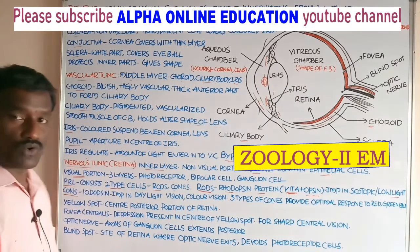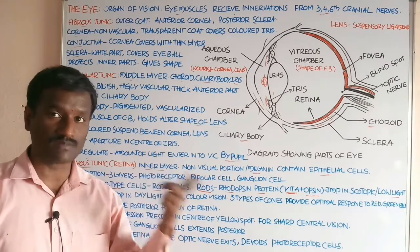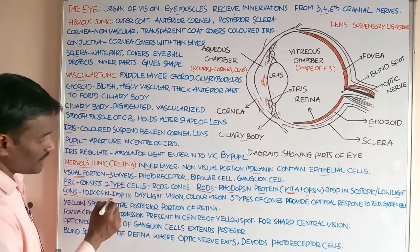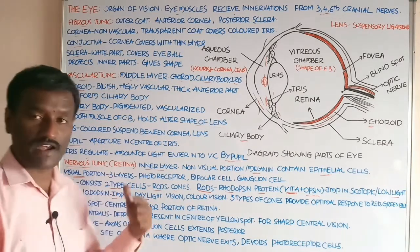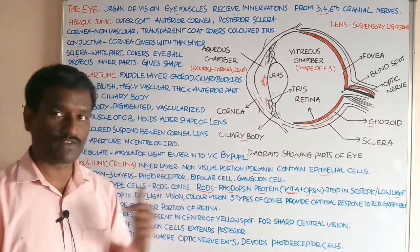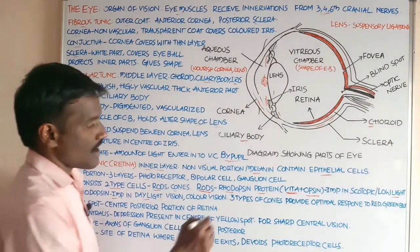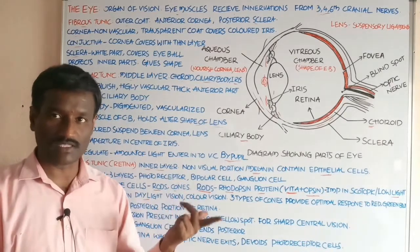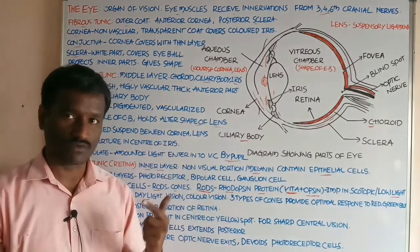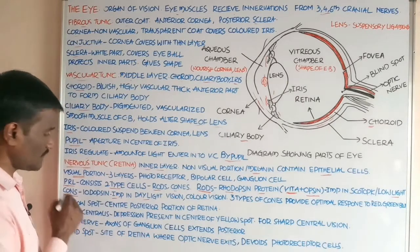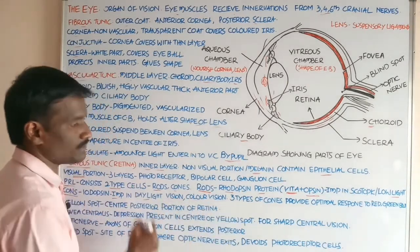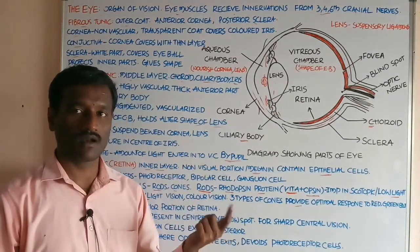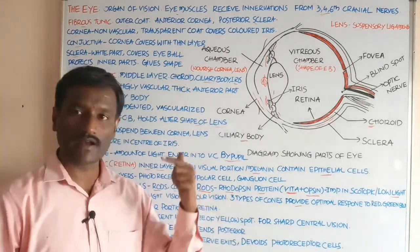Cones contain iodopsin protein, which is important in daylight vision and colored vision. There are three types of cones, which provide optimal response to red, green, and blue colors.